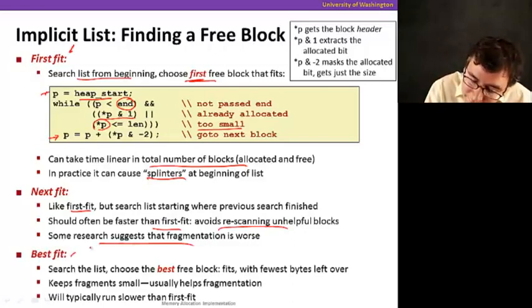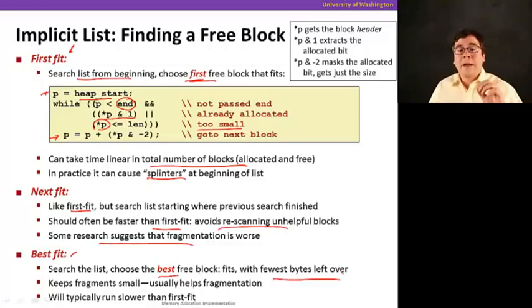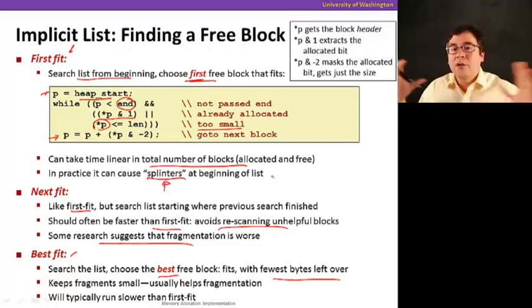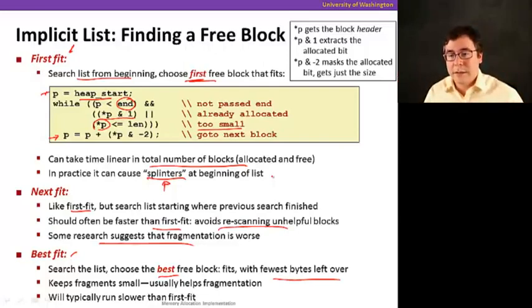Now, there's something else called the best fit, which you search the entire list, and you find the best free block, which is the one that has the fewest bytes left over. By the way, so, splinters here, in case it wasn't clear what I said, is when you have, you tend to find blocks that are too big for what you need, so there's a little bit more waste. So, best fit, we don't have that problem because you're always going to find the one that's the best one among the free blocks that you have. The one that's the smaller one that's sufficient to honor your request. So, this keeps fragmentation small, so it usually helps fragmentation. And typically, it runs slower because you're going to have to look at entire lists as opposed to stopping when you find the first one.